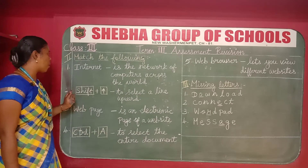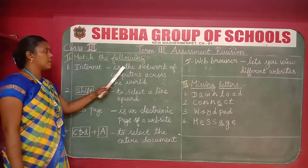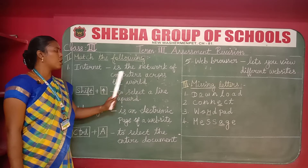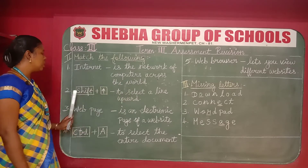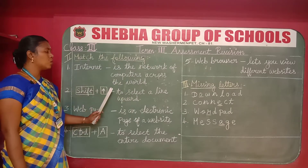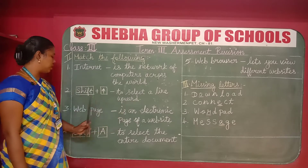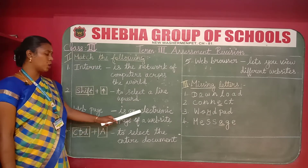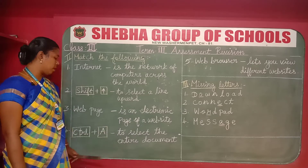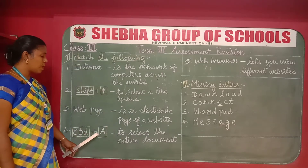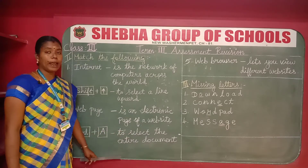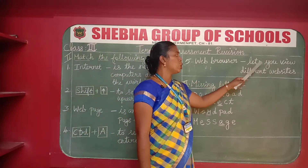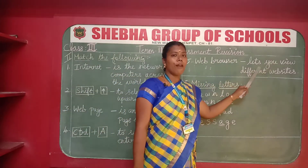To summarize the match the following answers: one — internet is a network of computers across the world; two — Shift plus up arrow to select a line upward; three — web page is an electronic page of a website; four — Control plus A to select the entire document; five — web browser lets you view different websites.